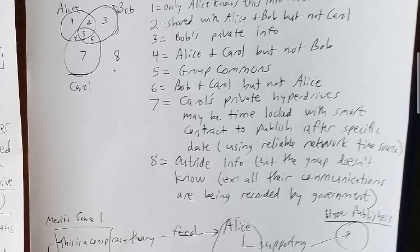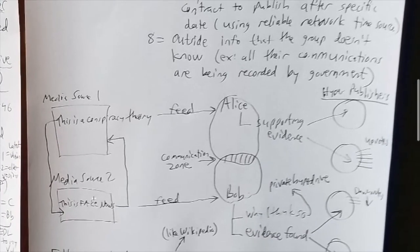Okay, so now eight is outside info that the group doesn't know. So maybe all their communications are being recorded by the government. Oh, they're doing a conspiracy. No. So, yeah, so there's a blind self. In a way, I look at this as like, you know, your public self, your blind self, your hidden self from psychology. Okay, but that is a fact of the system that they don't know they're being spied on. Okay, so, but that could be represented like the government hyperdrive, their dossier on these three guys, three people.